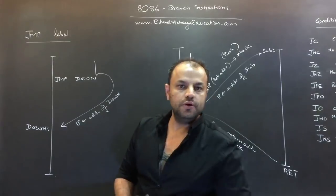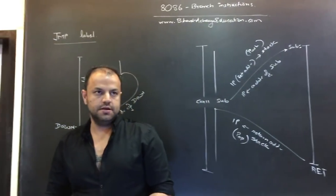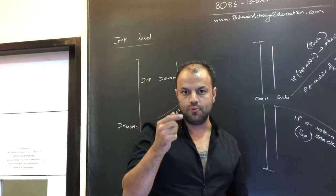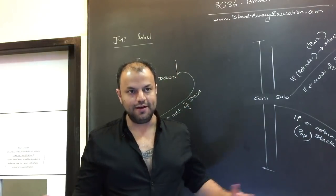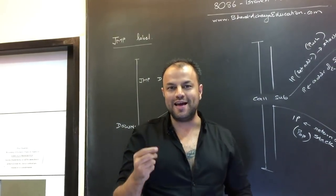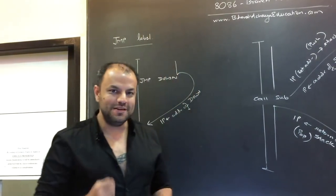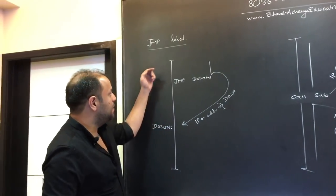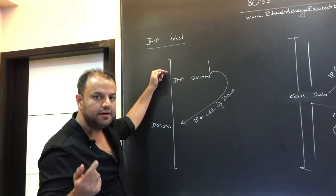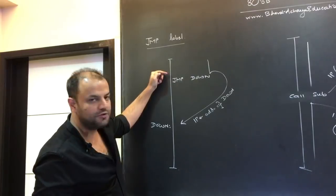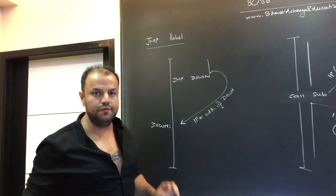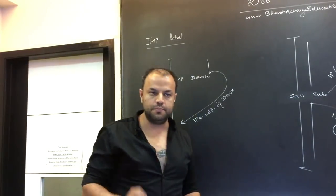Instructions normally are executed in a sequential manner — they go one by one. That's because of something called IP. IP stands for instruction pointer. IP always gets incremented after every instruction, and that's what makes the program go in a sequential manner. So that's the default behavior of a program.